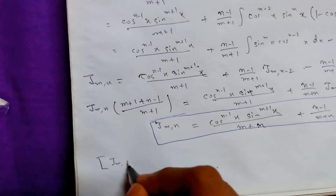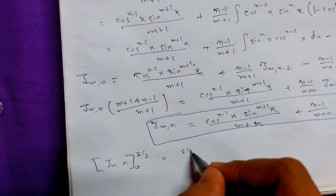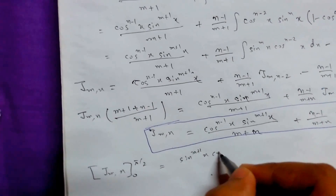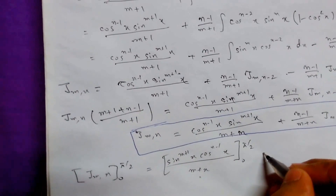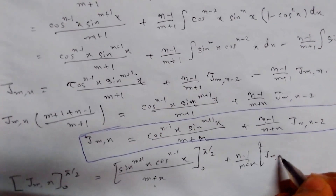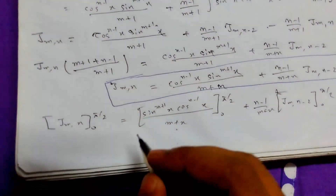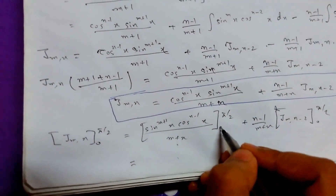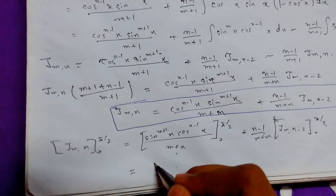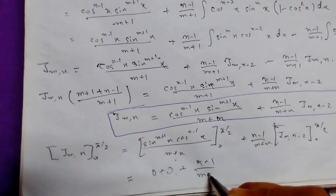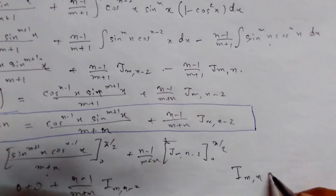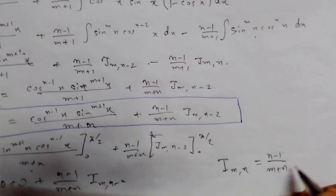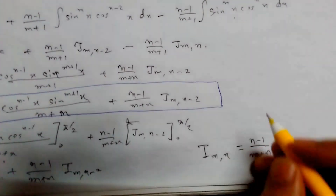Now for the second part, we need to just apply the limits from 0 to π/2. Applying the limits to the boundary term — cos^(n-1)(x) · sin^(m+1)(x) upon (m+n) evaluated from 0 to π/2 — this will be 0, as sin(0) = 0 and cos(π/2) = 0. So this gives 0 plus 0, and the result for the definite integral is (n-1)/(m+n) times I(m, n-2). So our second part answer is this.